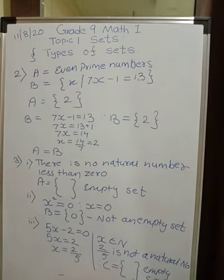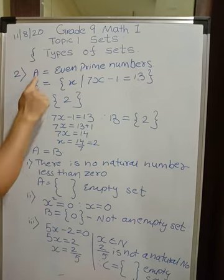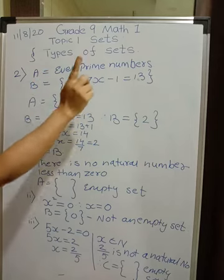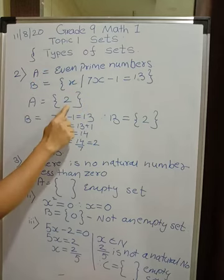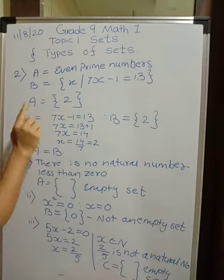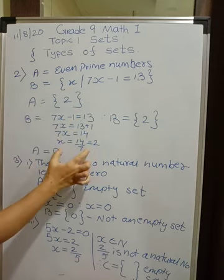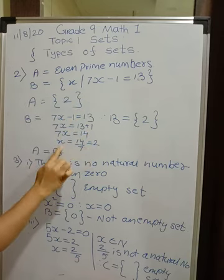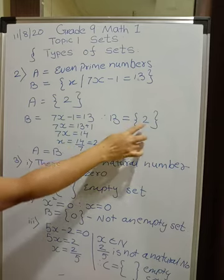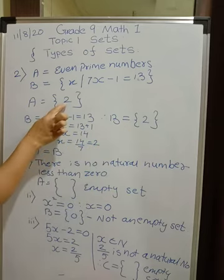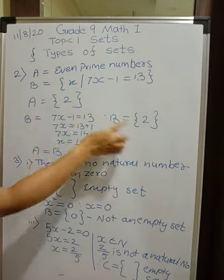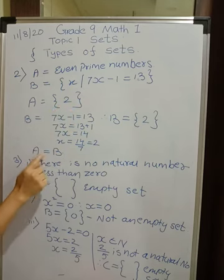Question 2: decide whether A and B are equal sets. A is the set of even prime numbers — the only even prime number is 2, so A = {2}. For B, the condition is 7X minus 1 equals 13, solving gives X = 2, so B = {2}. Both sets have the same element 2, and therefore A is equal to B.